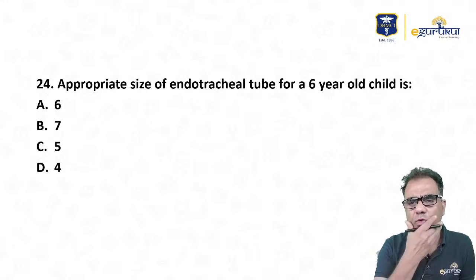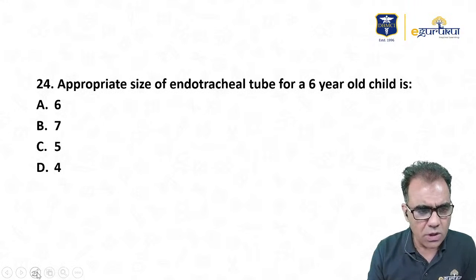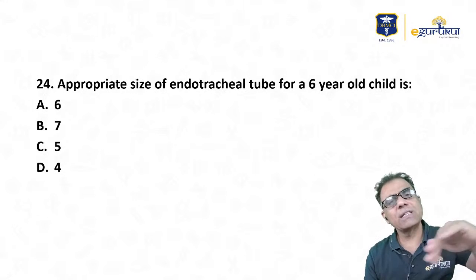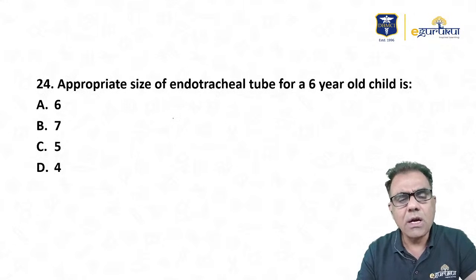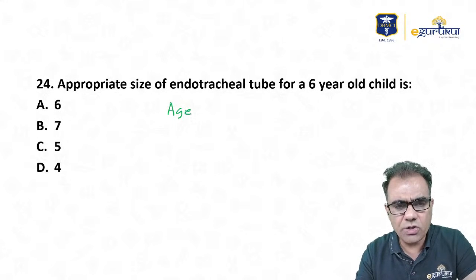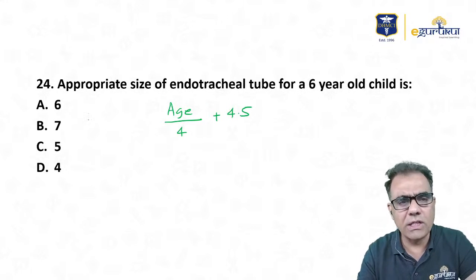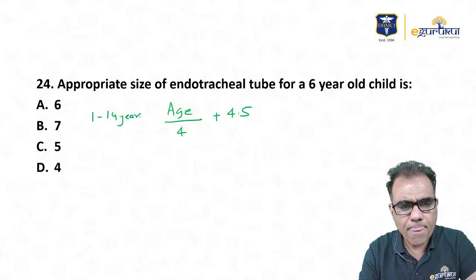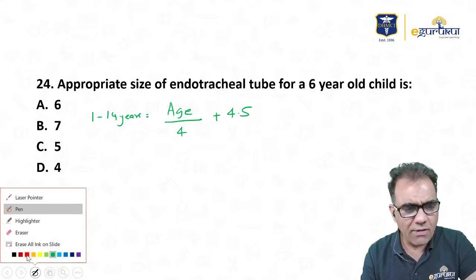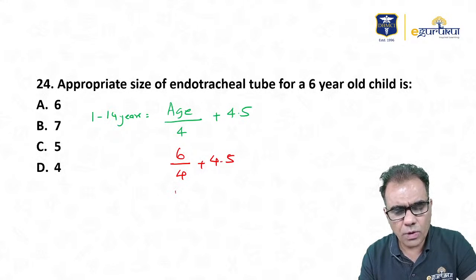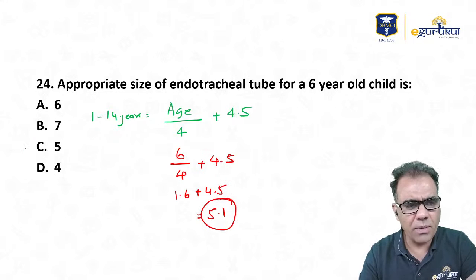Question number 24: Appropriate size of endotracheal tube for a 6-year-old child. Previously there were different formulas for children under 6 and over 6 years. Now there is a single formula: age (in years) divided by 4, plus 4.5 — for all ages 1-14 years. For a 6-year-old: 6/4 + 4.5 = 1.5 + 4.5 = 6.0 — actually 6 divided by 4 = 1.5, plus 4.5 = 6.0, but using the calculation: 6÷4 = 1.5 + 4.5 = 6 — approximately size 5. Answer: C (size 5).